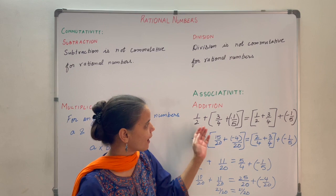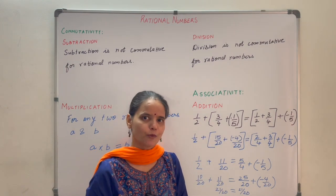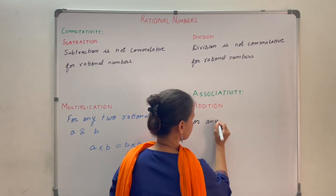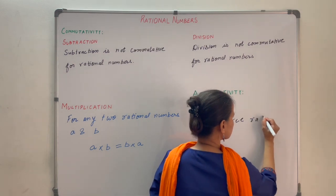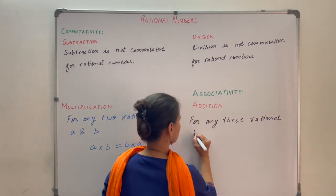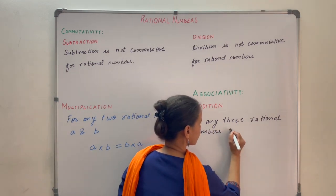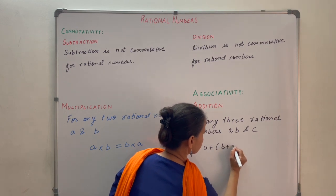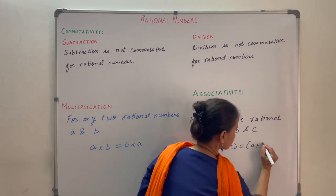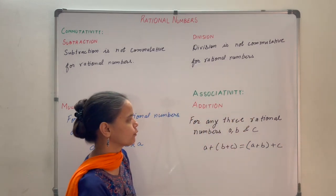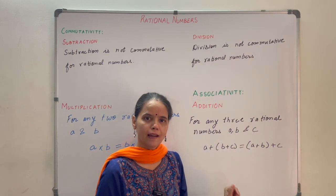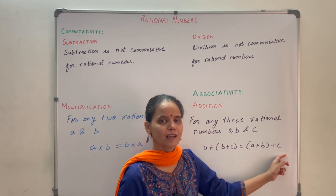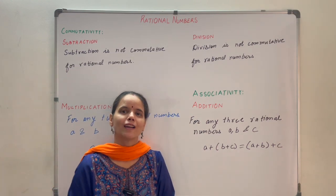So you can see that you can add rational numbers in any order. For any three rational numbers A, B, and C: A plus (B plus C) equals (A plus B) plus C. Here we are adding B to C first and then adding the result to A, which is the same as adding A and B first and then adding C. So we say that addition is associative for rational numbers.